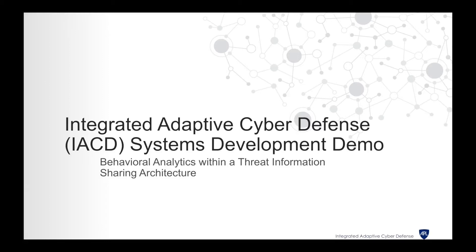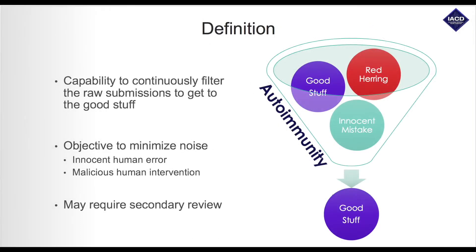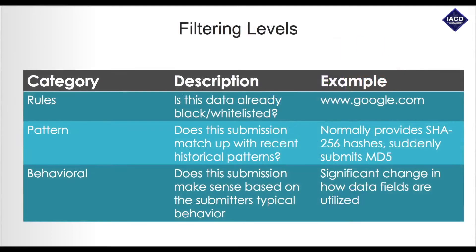Autoimmunity attempts to be aware of and mitigate some of these potential problems. Using a real-time, behavioral-based analytics approach allows us to constantly filter raw submissions through the broker to minimize noise. Submissions and indicators that are classified as above or below the threshold will be funneled into another pool that may require secondary review. Autoimmunity includes rules filtering and pattern-based filtering.